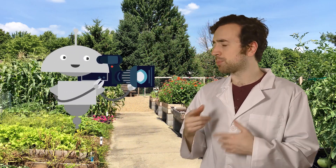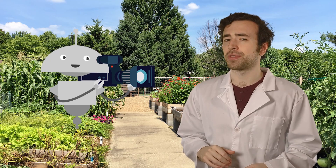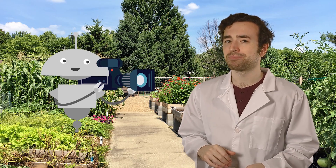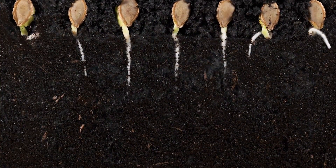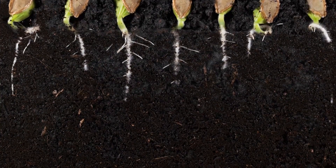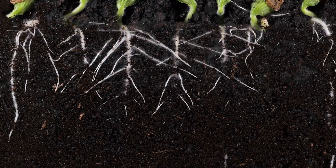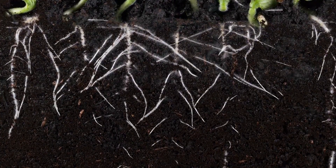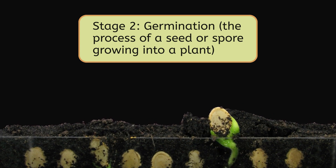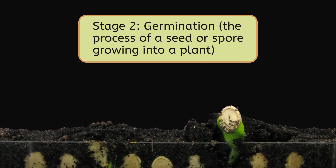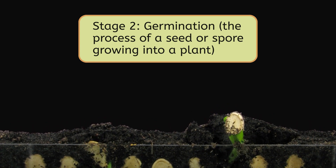Mia, do you have some sped up footage of these seeds after you put them in the soil? What do you see coming out of the seeds here? The roots. And if we look above the soil, we can see a tiny sprout starting to form. This stage is called germination, the process of a seed or spore growing into a plant.